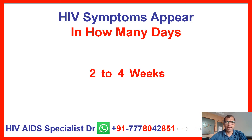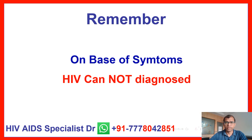So the answer to the main question — HIV symptoms appear in how many days? — is approximately 2 to 4 weeks, that means 14 to 28 days. But remember, HIV cannot be diagnosed on the basis of symptoms alone. For example, fever can appear due to many other reasons besides HIV. So diagnosing HIV based on symptoms is not possible. This is the most important thing you should learn from this video.